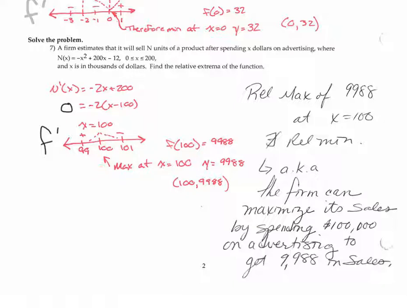That's here splitting the number line. Test the values, positive, negative. That gives us a relative max here. Go find the y value.